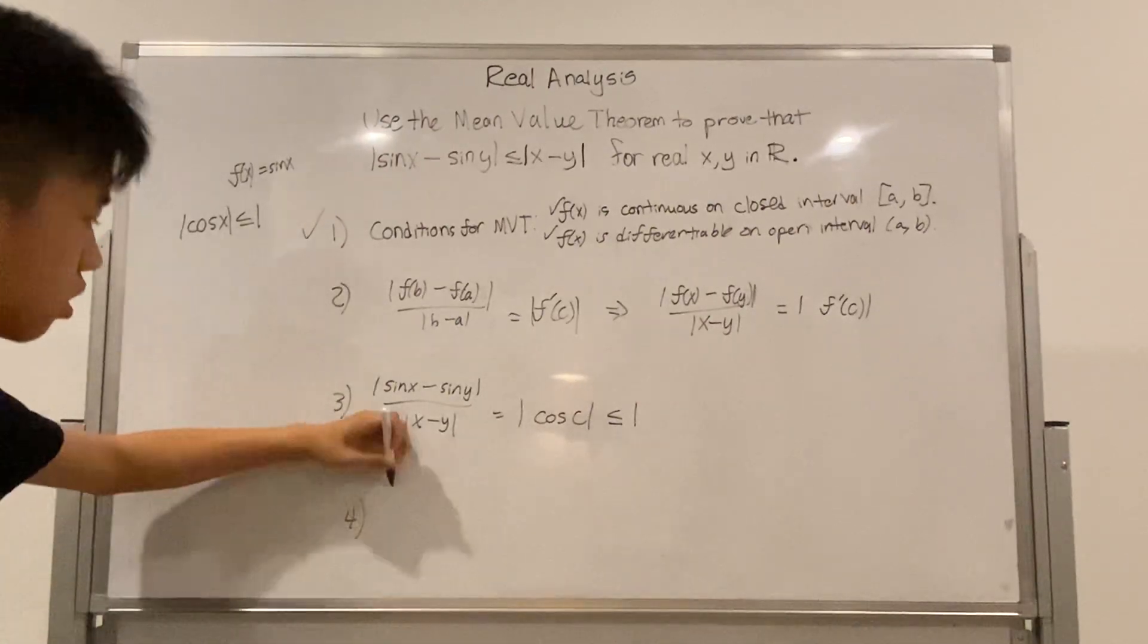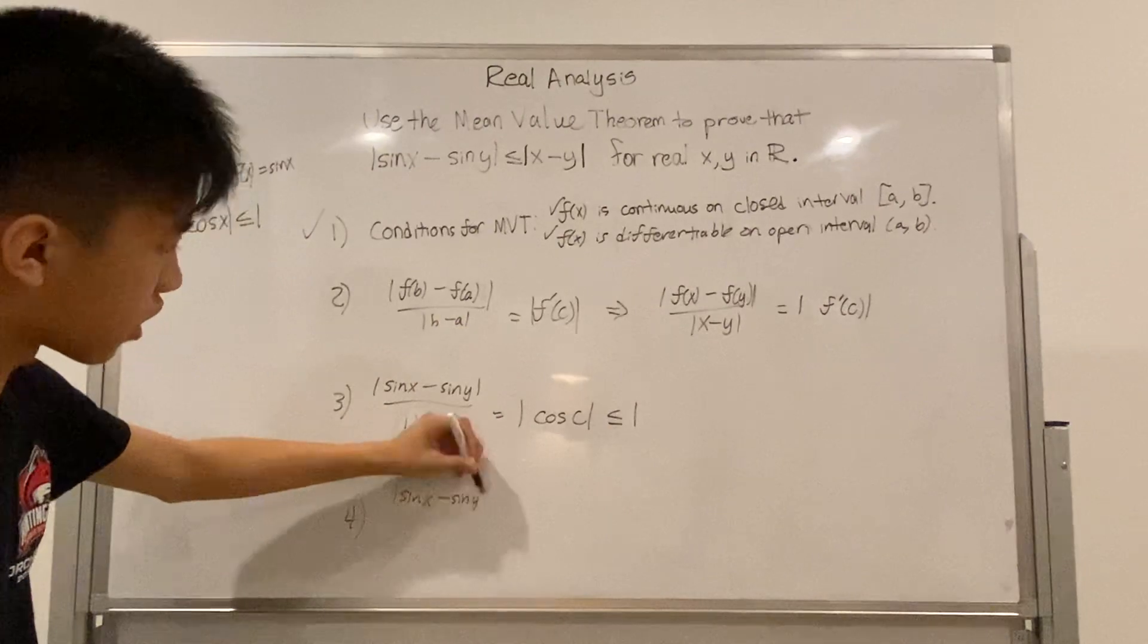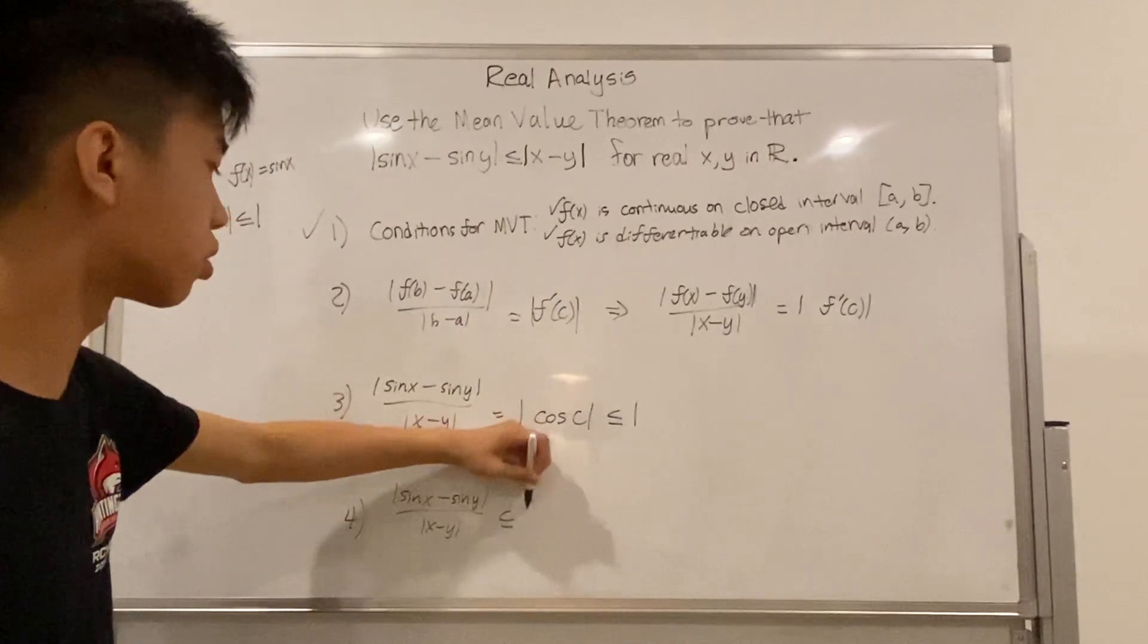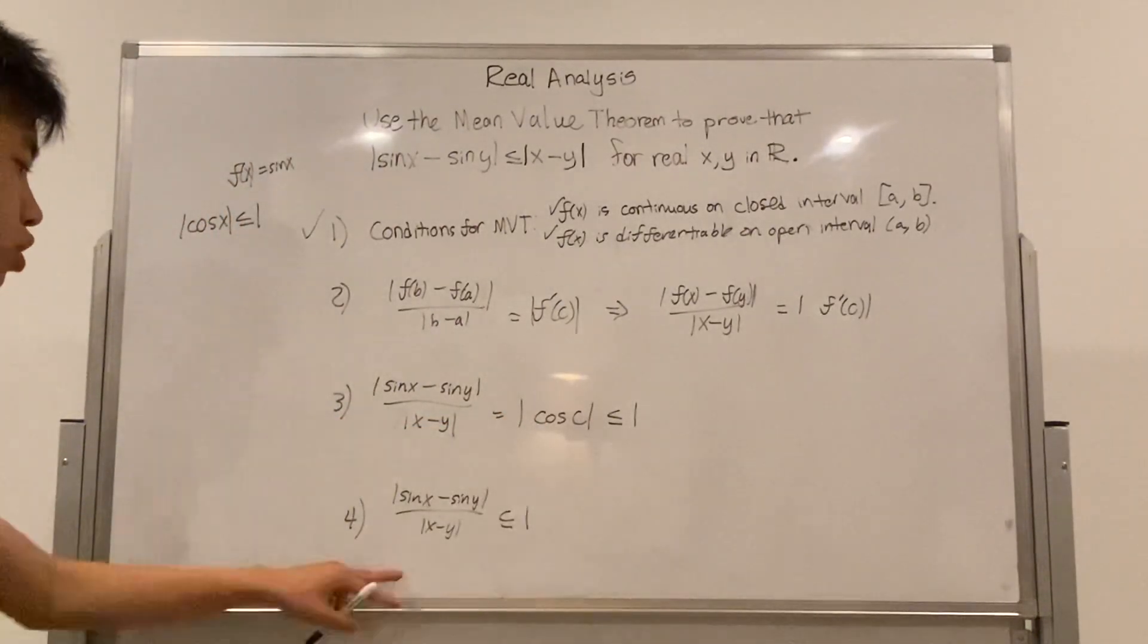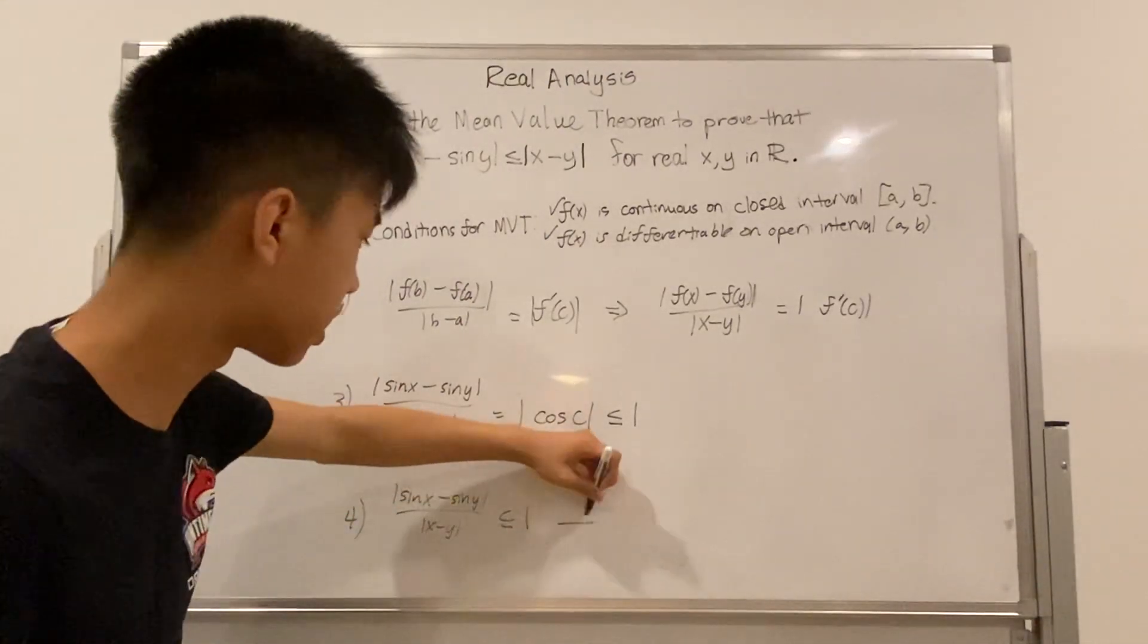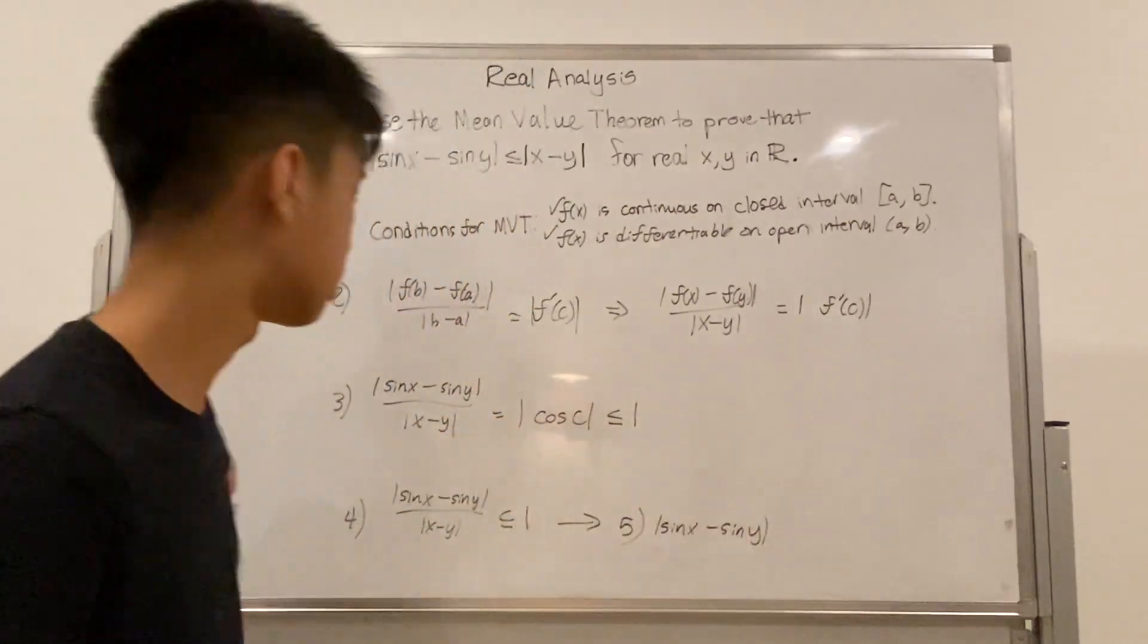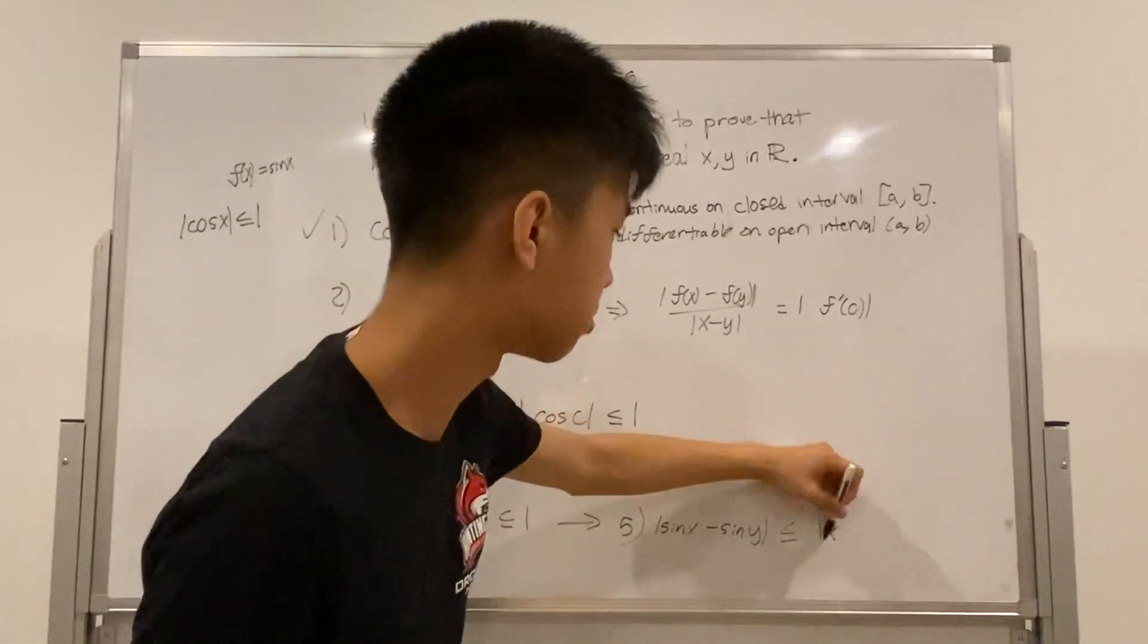So therefore absolute value sine x minus sine y over absolute value x minus y is always equal to or less than one. And then if you multiply both sides by absolute value x minus y, we get sine of x minus sine y in absolute value is equal to or less than absolute value x minus y, therefore proving this statement at the beginning.